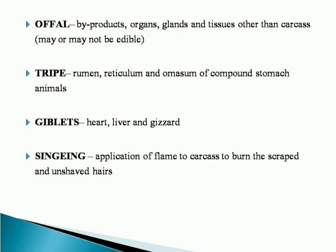Offal refers to byproducts, organs, glands, and tissues other than the carcass. It may or may not be edible. The carcass byproducts include organs, tissues, glands, and other byproducts.